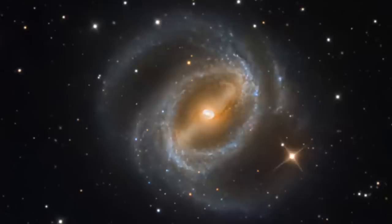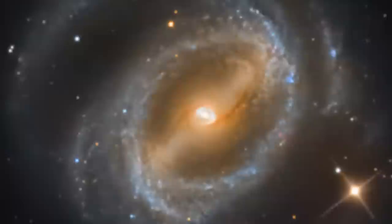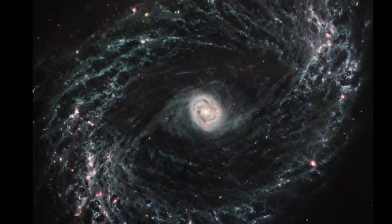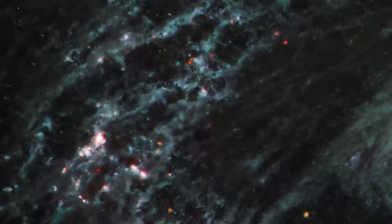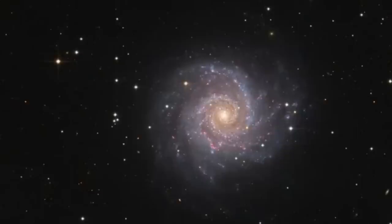NGC 1433 is a barred spiral galaxy with a double ring structure. The central region has intense star forming activity. The James Webb Space Telescope is able to pierce through the dust region surrounding the younger stars and reveals the intricate detail of the spiral arms in far more detail.